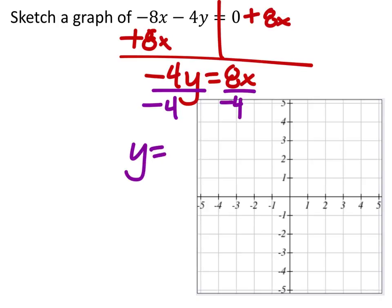And I get y is negative 2x. We can put plus 0 if we want, just so we can see what the y-intercept is. So that's 0, 0.